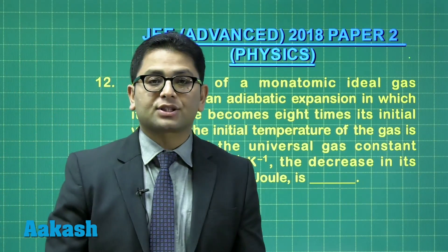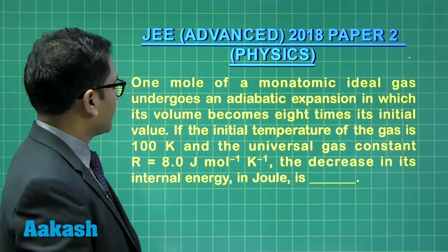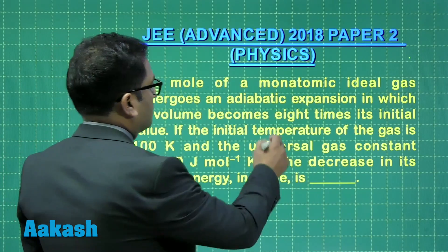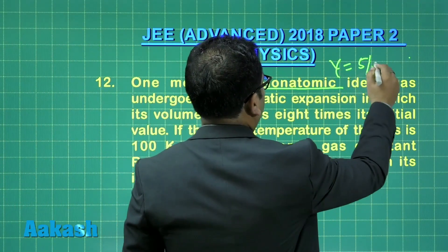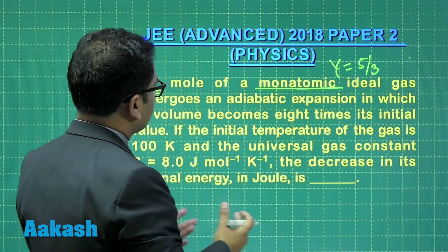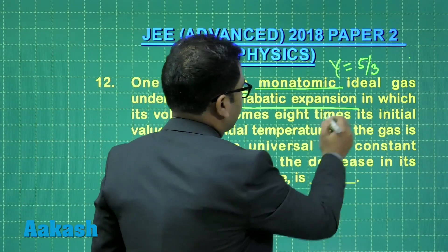Question number 12. Another very straightforward question from thermodynamics. One mole of monoatomic - oh, monoatomic, that means the value of gamma has to be 5 by 3 - undergoes an adiabatic expansion.